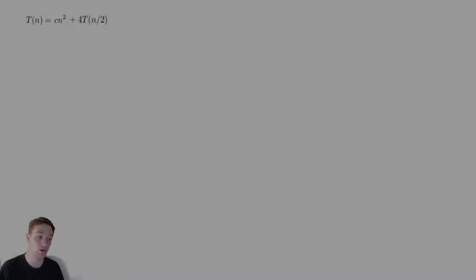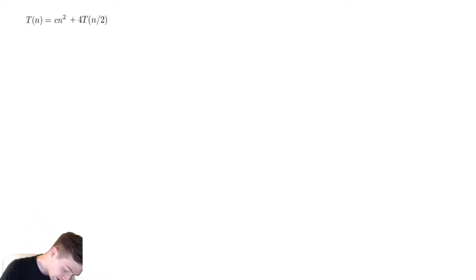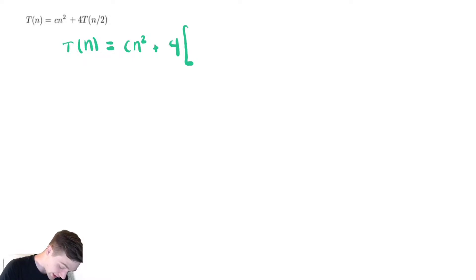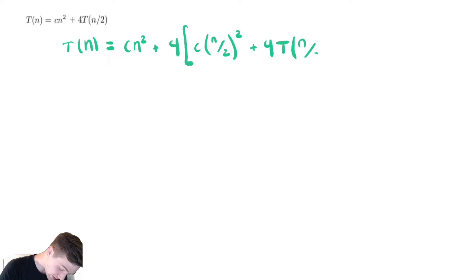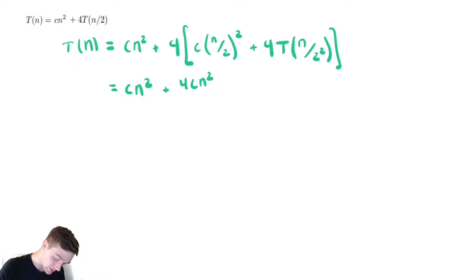For our next example we're doing the same thing as before but this time we're making four recursive calls. Rather than use a recursion tree, let's use substitution for more practice. So T(n) equals cn squared plus 4T(n/2). Performing one substitution — plugging in n/2 — we get cn squared plus 4 times (cn/2 squared plus 4T(n/4)), which gives cn squared plus distributing the 4: 4 times cn squared over 4, which is just cn squared.